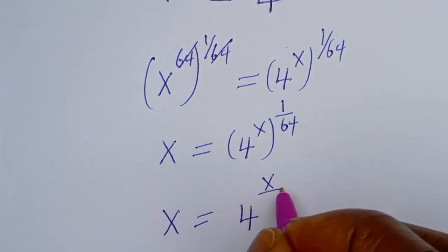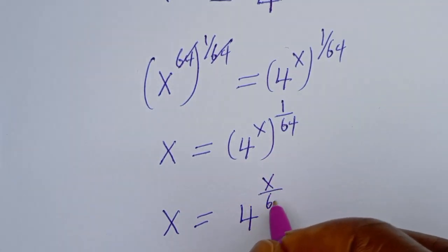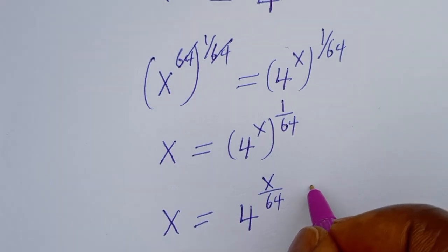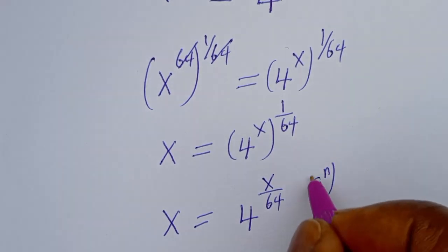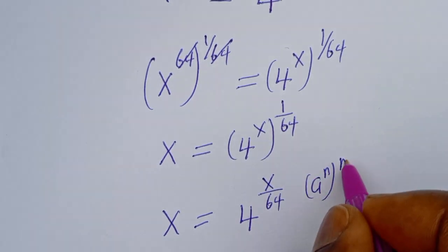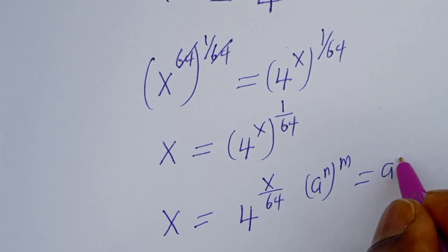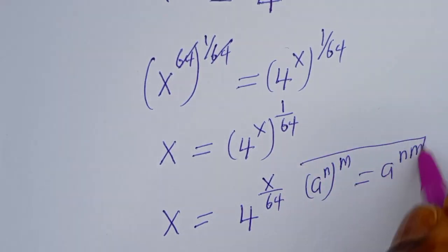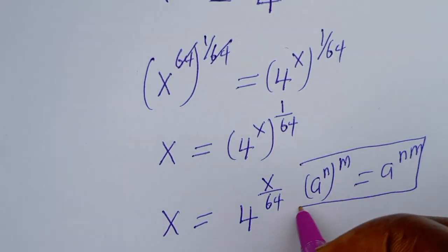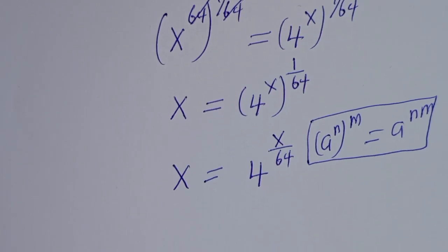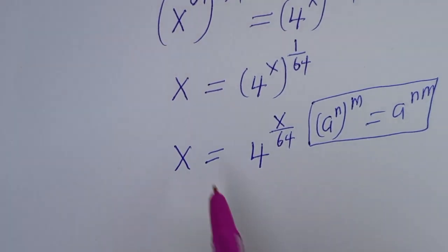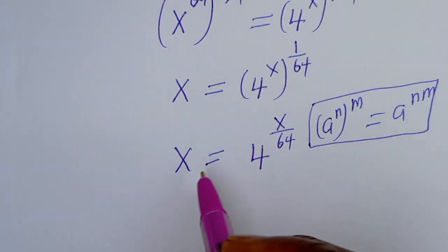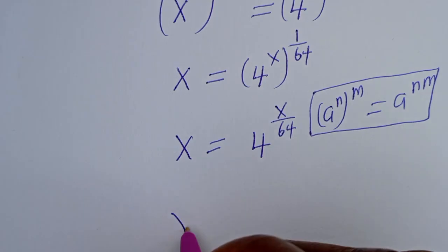That is: if you have n to the power of m, this equals n to the power of nm. Now let's multiply the exponent of both sides again by 1 over s.